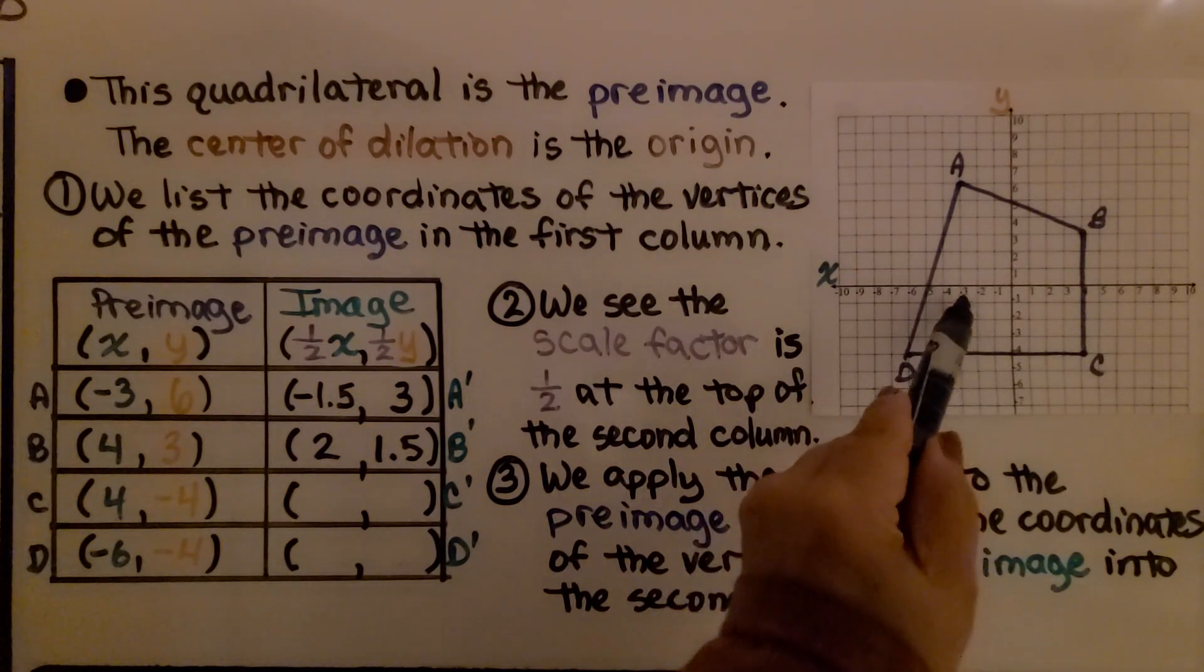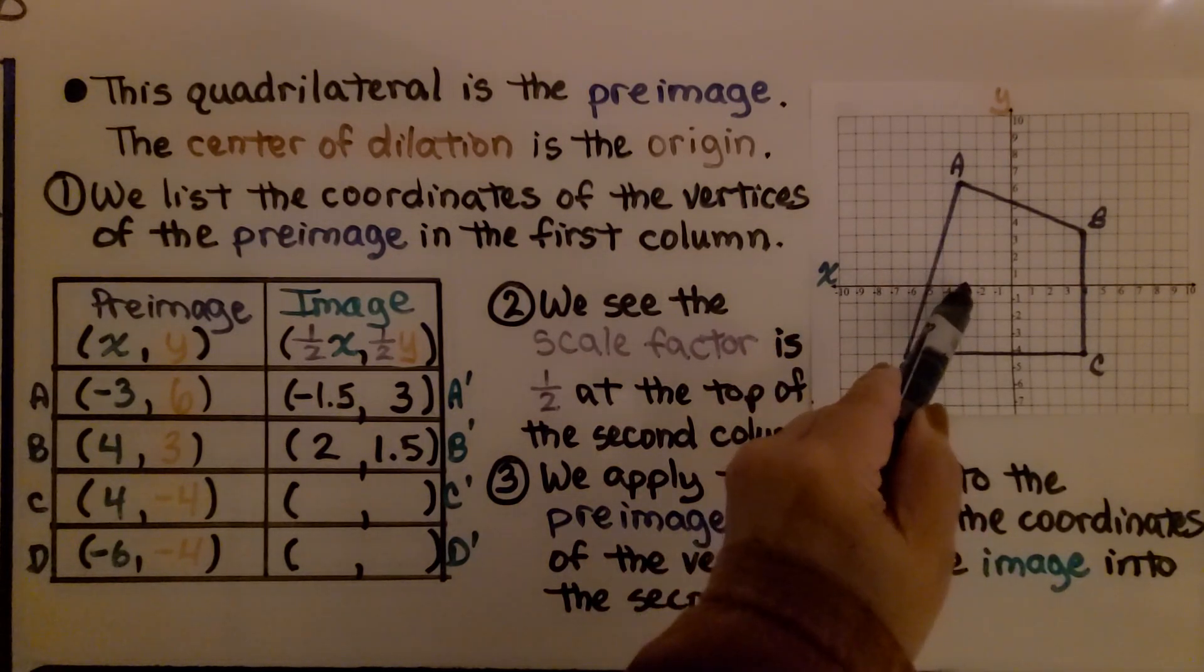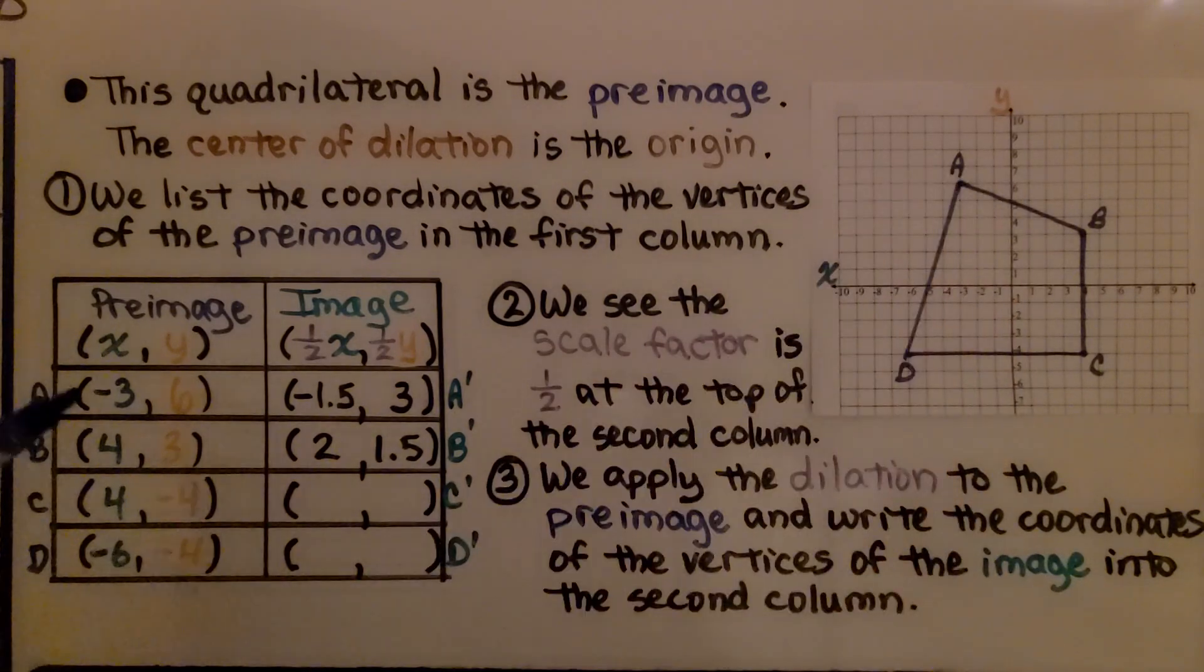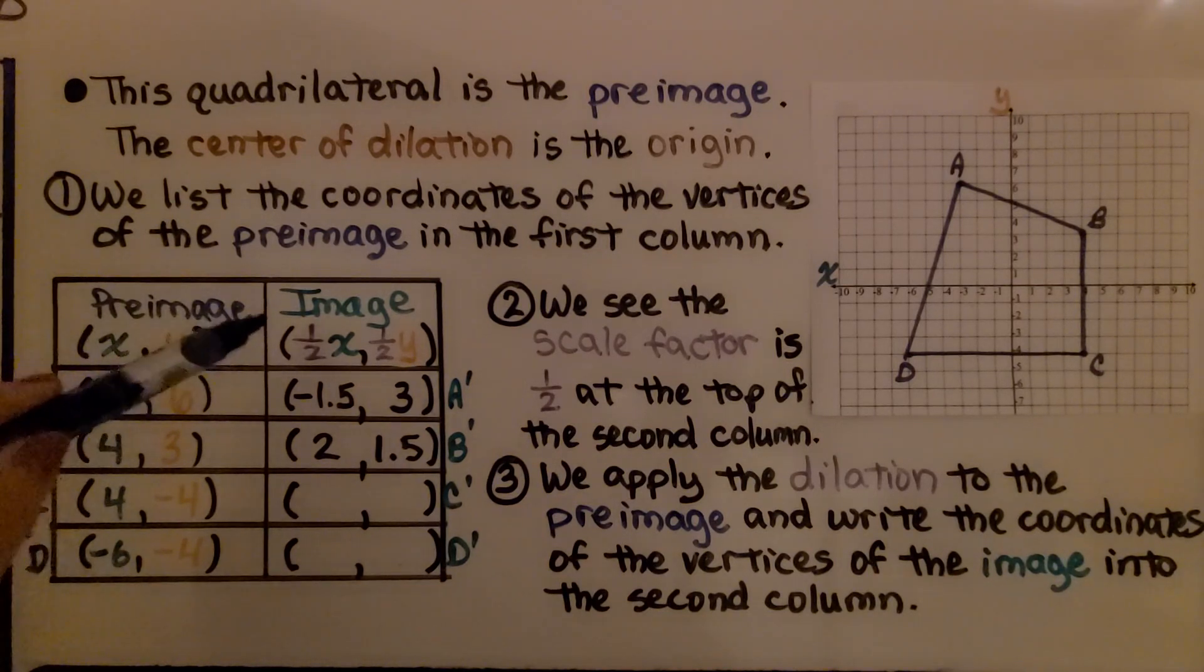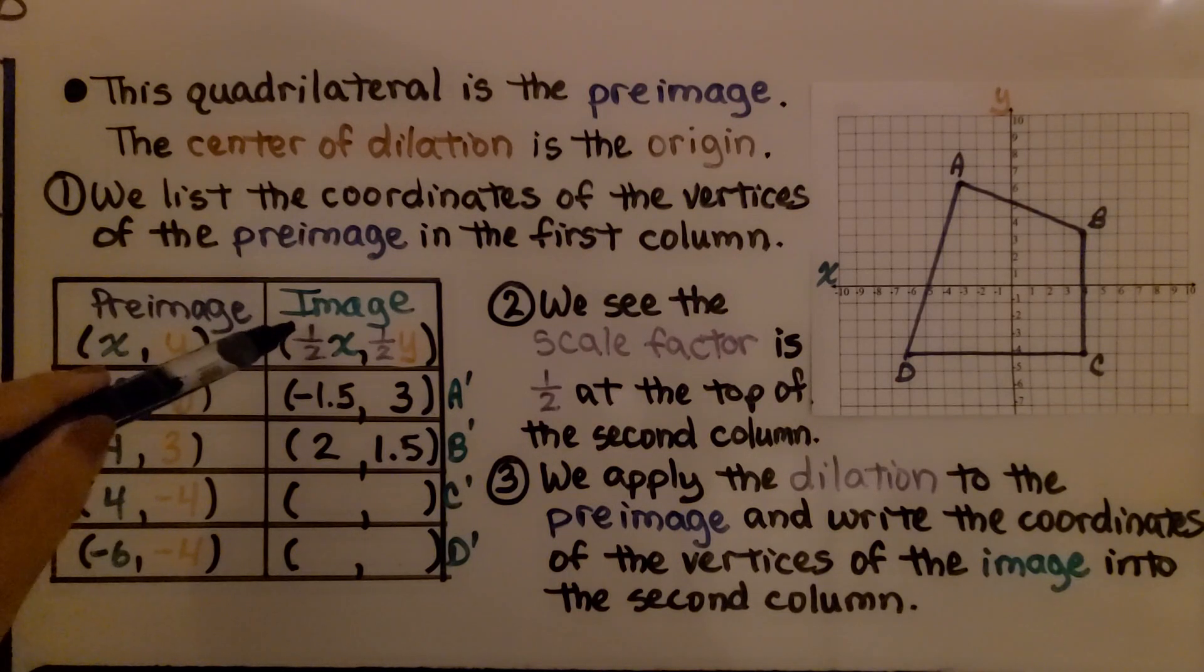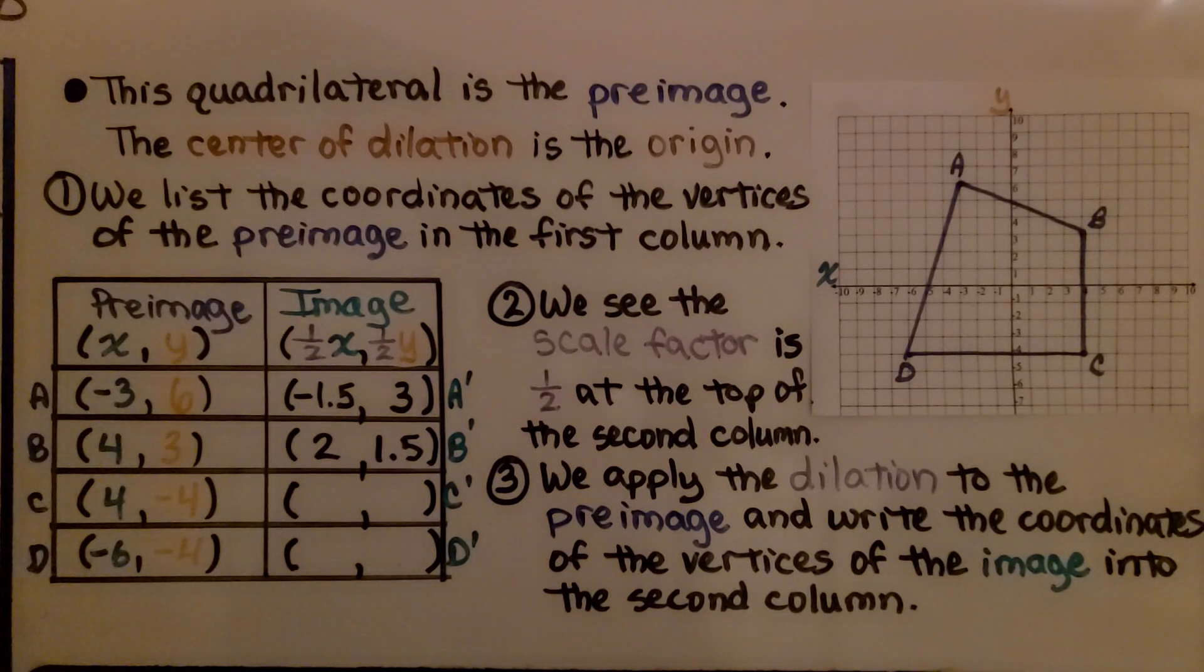When we look at where they are, we can see A is at negative 3 for x and 6 for y. We list each vertex coordinate. We can see the scale factor is 1/2 at the top of the second column. We apply the dilation to the preimage and write the coordinates of the vertices of the image into the second column.